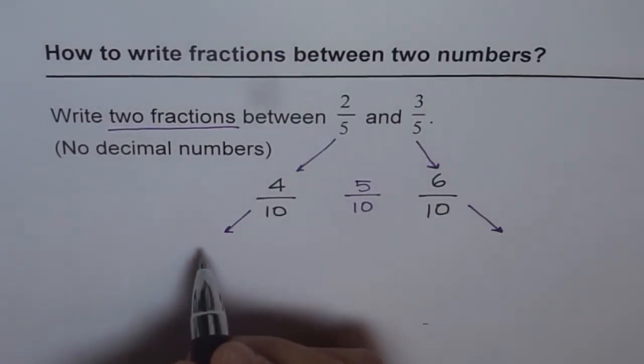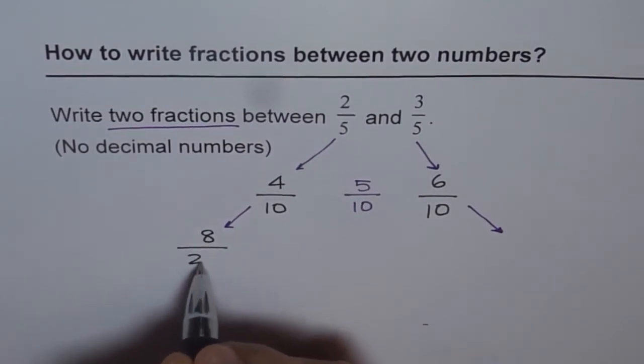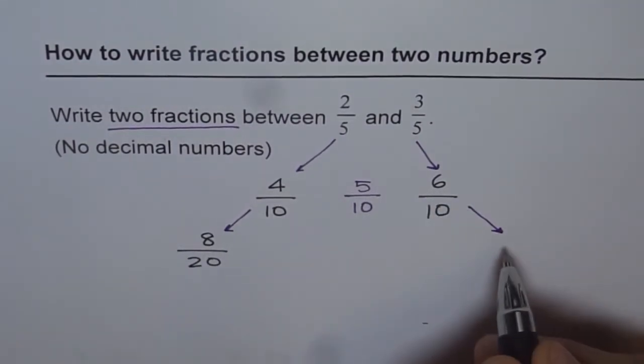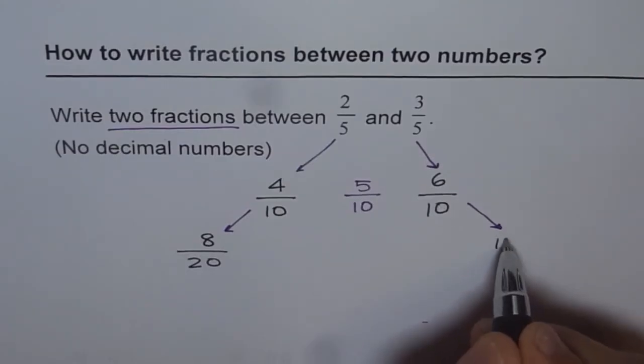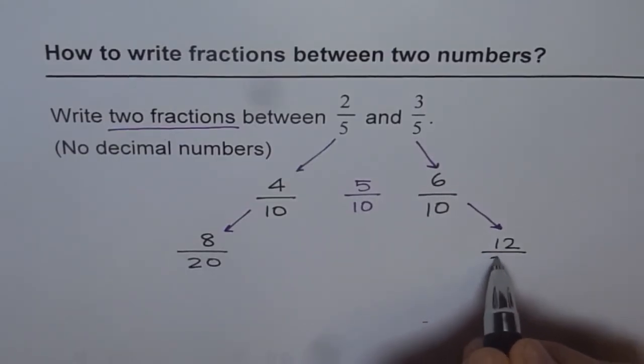4 times 2 is 8 and 8 over 20. How about 6? 6 times 2 is 12. We get 12 over 20.